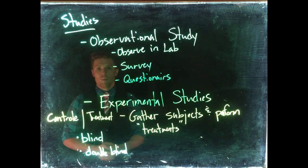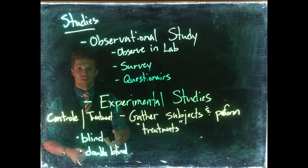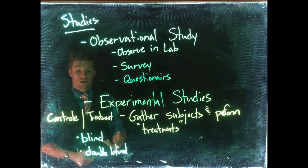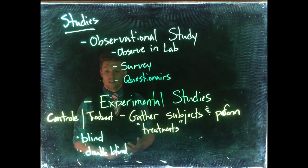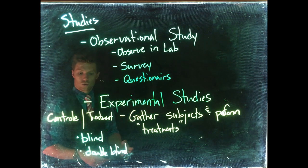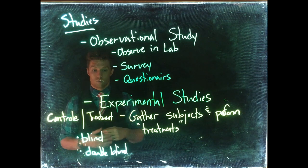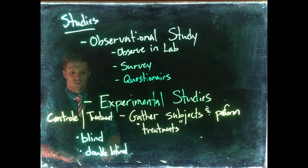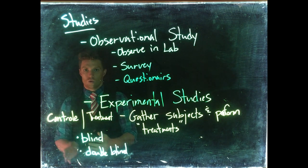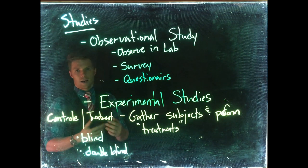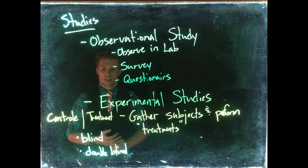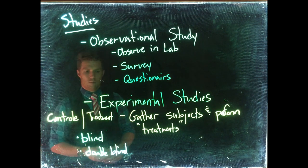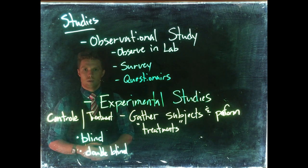In a double-blind study, the person giving the patient the pill doesn't even know if it's the treatment or the control. Neither the person administering the pill nor the person receiving it knows if it's the control or treatment. Someone behind the scenes does know what's going on so they can tease out the results, but the person handing out the pill and the person receiving it wouldn't know.